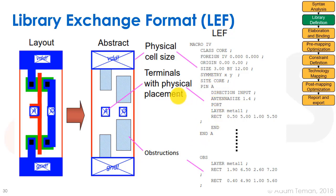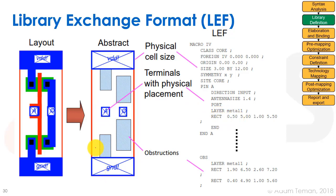Then it starts going into the descriptions of the different pins. For pin A, it says 'pin A', it's an input pin. It has information for antenna rule detection, which we'll discuss in a later lecture. Then it has what we call a port — the physical description of where this pin appears, all relative to the origin at 0, 0. It says there is a metal one rectangle from 0.5 microns up to 5 microns, to 1 micron and up to 5.5 microns. We have that for each pin, and we can also have something called OBS, or obstruction, that tells us where metal one pieces are that we can't route over.